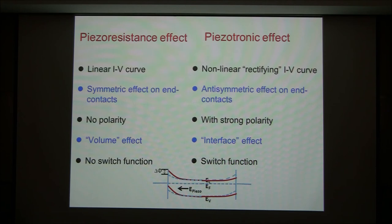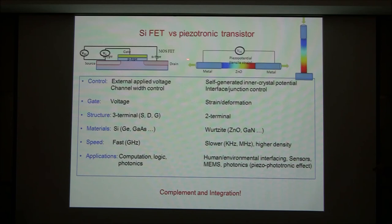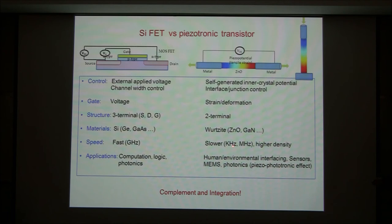So piezotronic effect is a new effect. How do we see the relationship between piezotronic transistors and the semiconductor FET? The first is external voltage control; the piezotronic transistor is inner crystal potential control. The FET relies on gate voltage; the piezotronic transistor relies on strain producing inner crystal potential. The FET has three terminals; the piezotronic transistor has two terminals. The FET uses silicon materials; the piezotronic transistor uses wurtzite-based materials. The FET can operate very fast; the piezotronic transistor operates in the kilohertz to megahertz range or even slower.